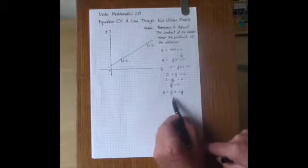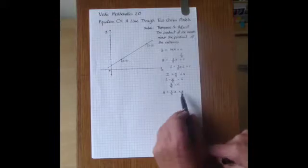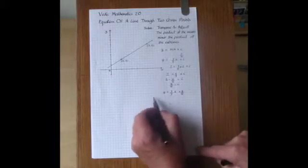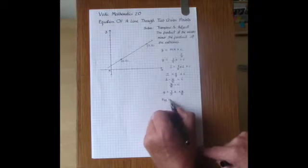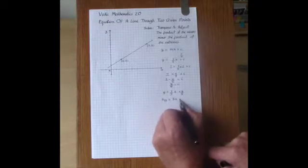And if we want to get rid of the ugly fraction parts then we can just multiply every term here by 5 giving 5Y equals 3X plus 4.